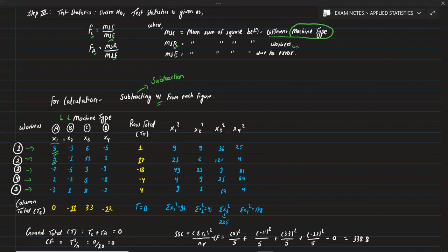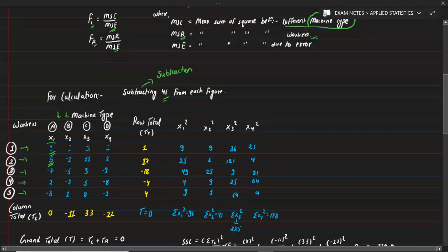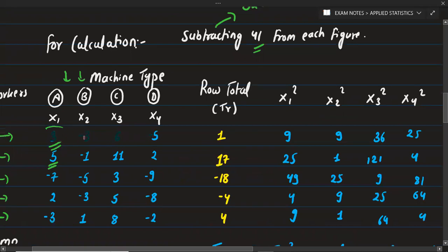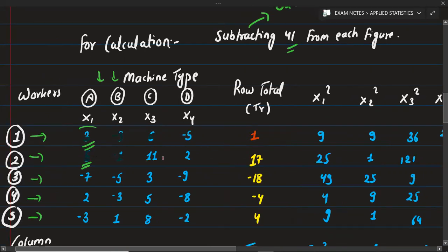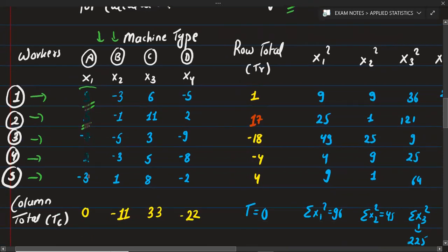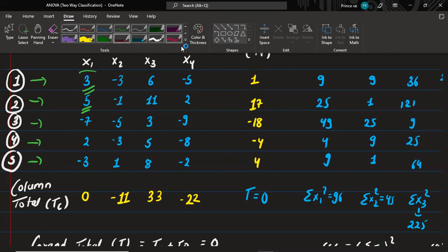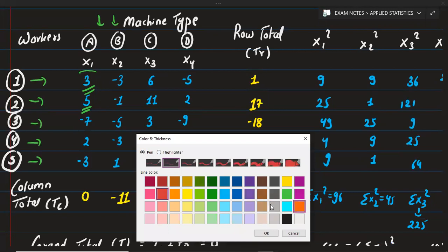Using a highlighter to make the work clear. Looking at the first row values: we can see values such as 3, 5, 7, 2 in the X1 column. We calculate the row totals and column totals, writing the total column on the side. The row totals and column totals are needed for the SSC and SSR calculations.